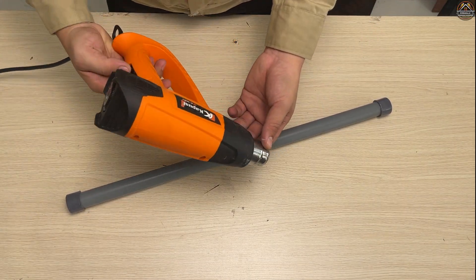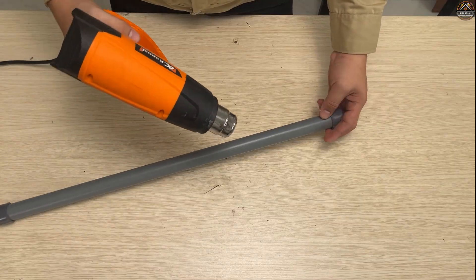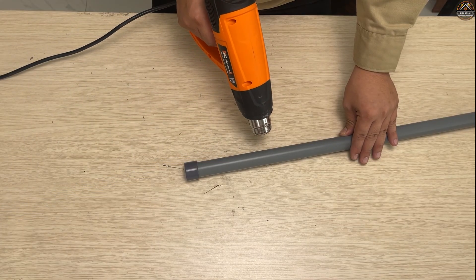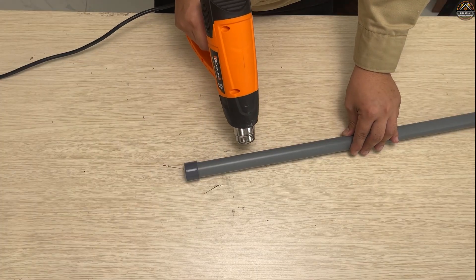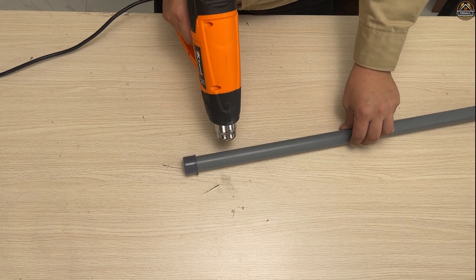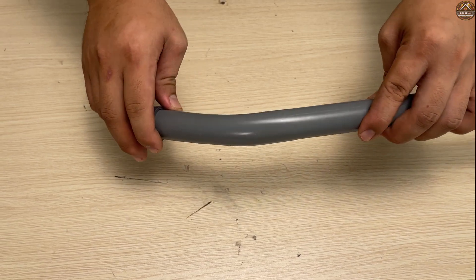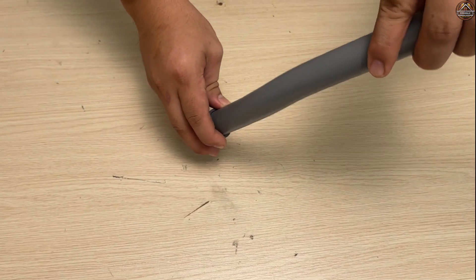Heat up the pipe. Do you know why I put sand inside the pipe? That's right. The sand helps us bend it into the shape we want more easily.